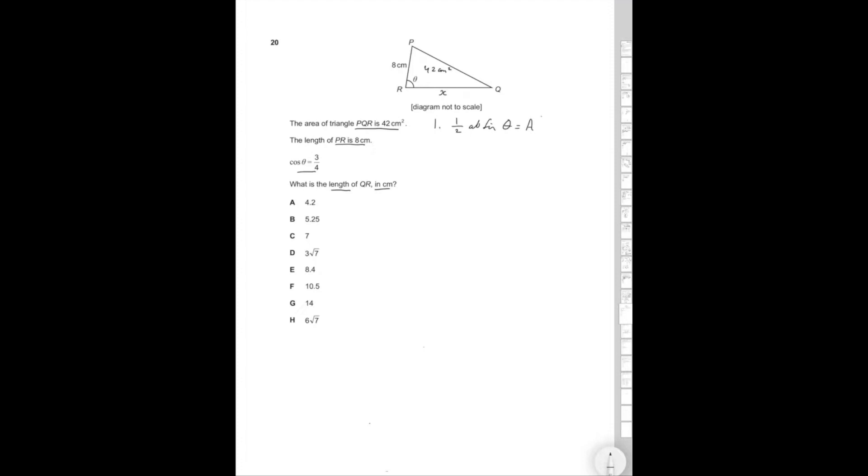So let's start off by saying that half AB sine theta is equal to area. So that's the formula you know from GCSE, the area of a triangle formula. So if we apply that to this triangle, half times eight times x sine theta is equal to 42. So 4x sine theta is equal to 42. x sine theta is equal to 42 divided by 4, which is equal to 21 over 2.